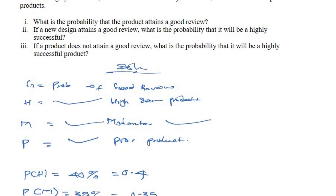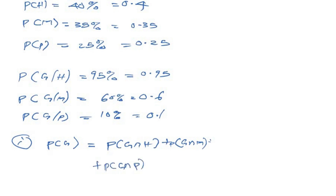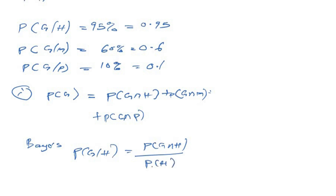For Part I, we need to find P(G), the probability of a good review. Using the law of total probability: P(G) = P(G ∩ H) + P(G ∩ M) + P(G ∩ P). From Bayes' theorem, P(G|H) = P(G ∩ H) / P(H), so P(G ∩ H) = P(G|H) × P(H), and similarly for the other terms.